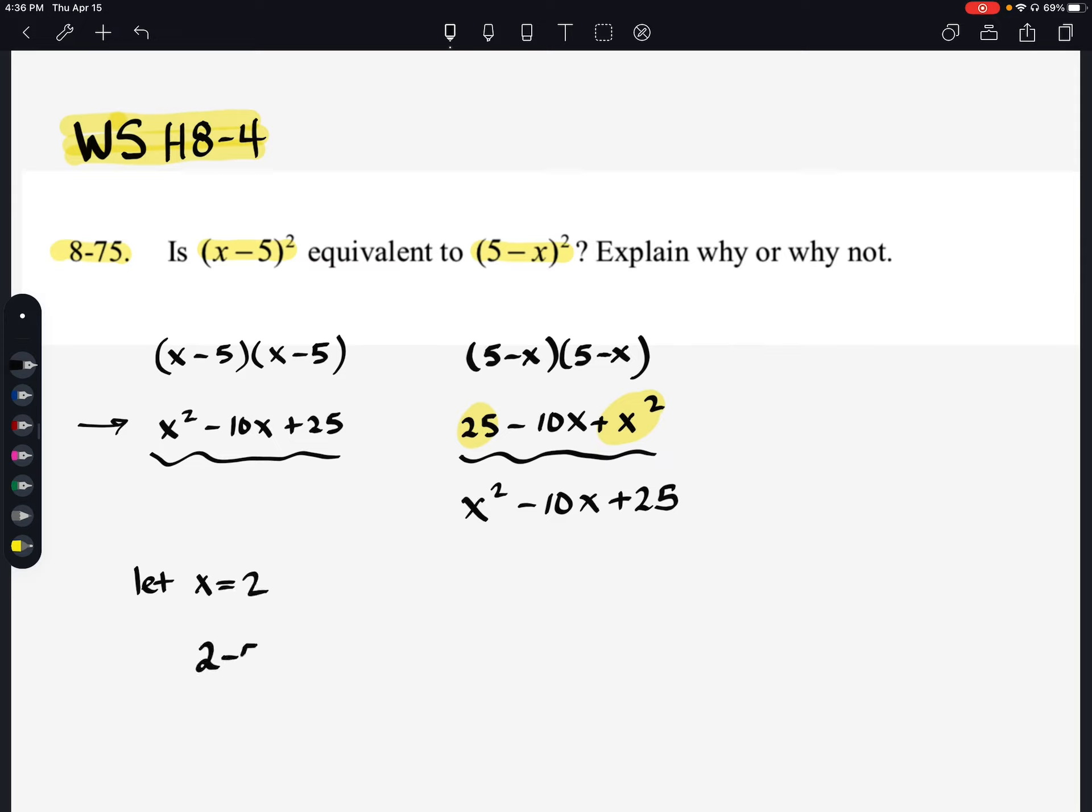2 minus 5 squared, and then we'd also have a 5 minus 2 squared. So when I do 2 minus 5, I get a negative 3, and I know that when I do negative 3 times itself, I get positive 9. When I do 5 minus 2, I get 3, and then 3 squared is also 9. So they get the same value, so we would consider them to be equivalent.